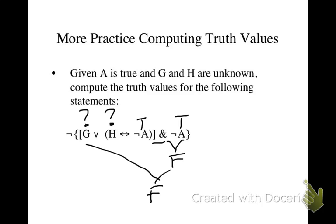And then that whole conjunction is negated, so the formula as a whole is true. We didn't need to know the truth value for G or H. We didn't even need to calculate the other not A. So sometimes it works out that easy.